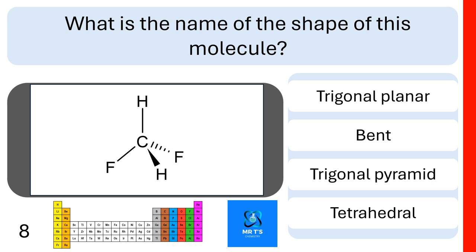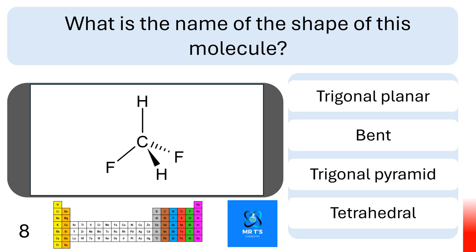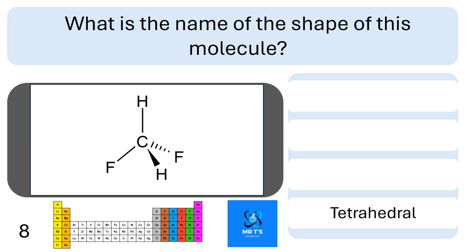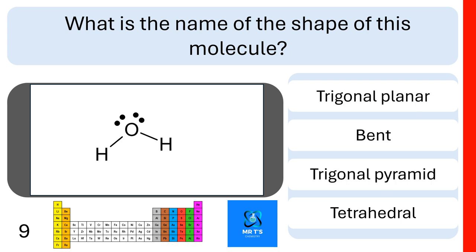Question eight: what is the name of the shape of this molecule? Is it trigonal planar, bent, trigonal pyramidal, or tetrahedral? If you put tetrahedral, you're correct, well done.